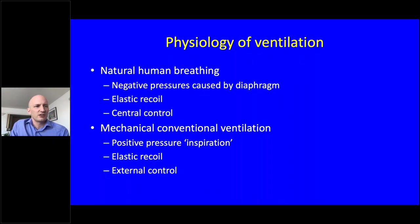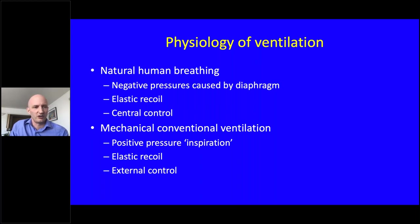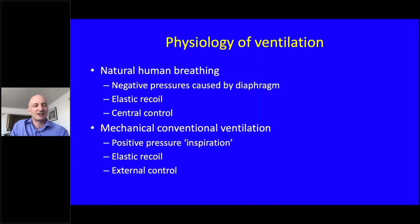In conventional ventilation, physiologically we use our diaphragm to generate negative pressure within the lungs, pulling air in. When we breathe out, the diaphragm relaxes and elastic recoil pushes air out. This is controlled by the brainstem, which reacts to changes in CO2 and oxygenation. With mechanical ventilation, we apply a positive pressure to drive air in during inspiration, but still rely on elastic recoil for expiration. The control of how much support to give is largely external, requiring investigations and blood gases.